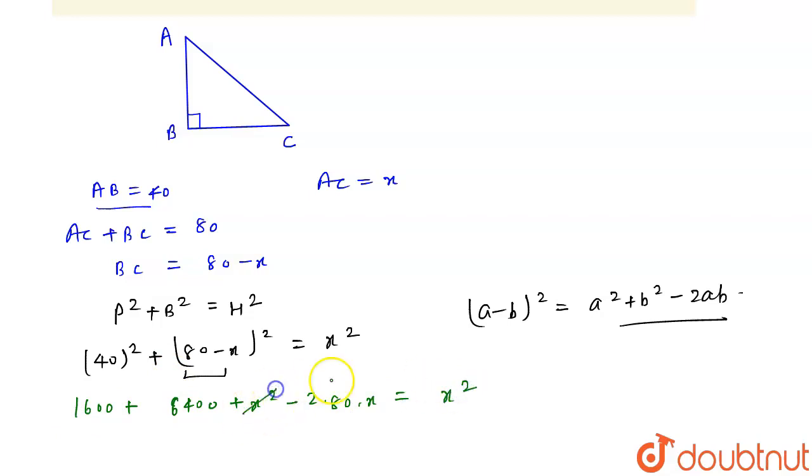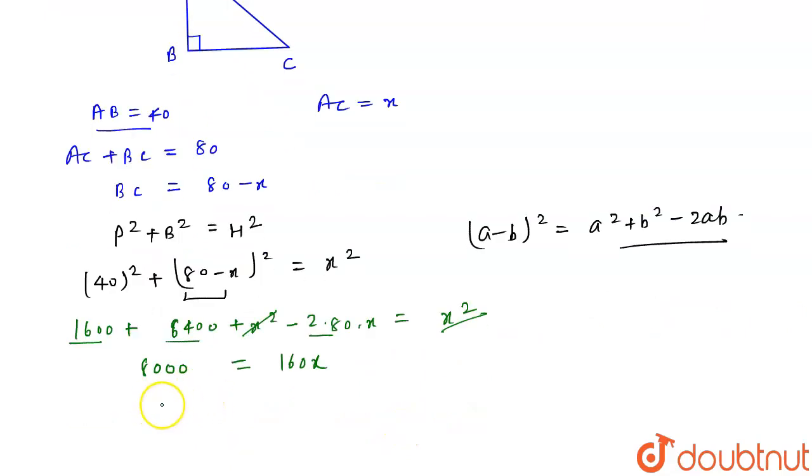x squared and x squared will cancel out and this will become 8000 equal to 160x. This will multiply and come to the right side so it will become positive, so now we can write 160x equal to 8000.